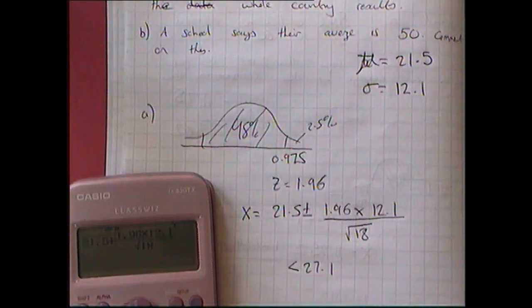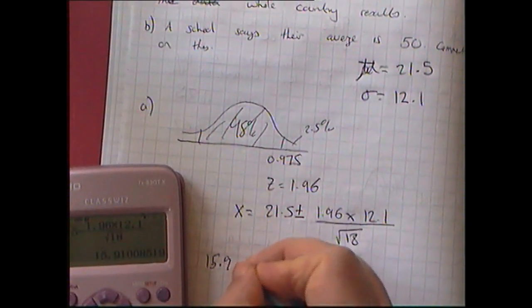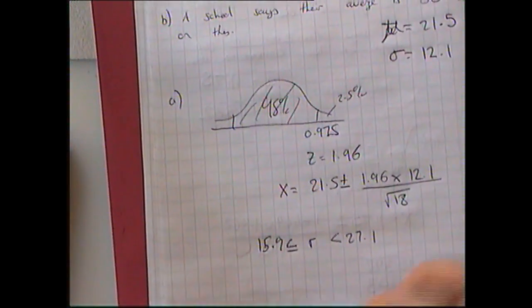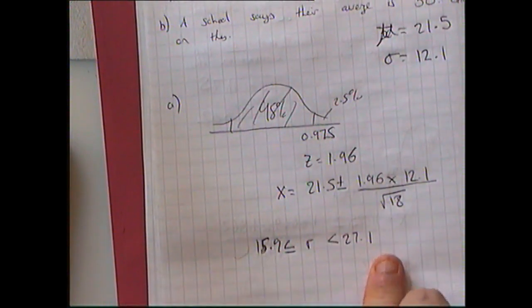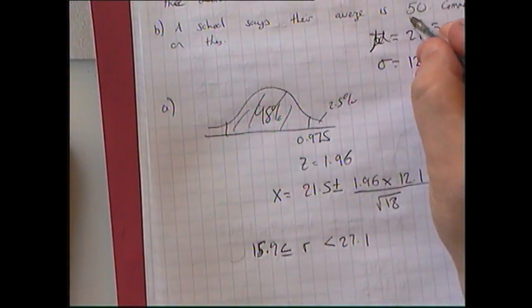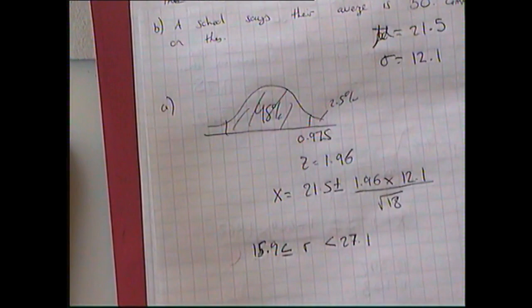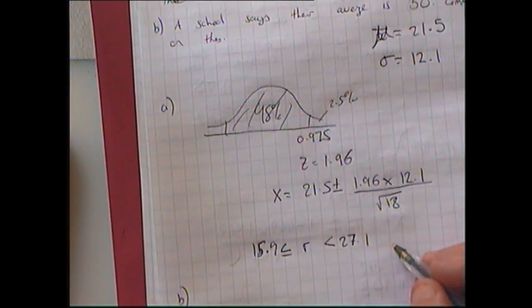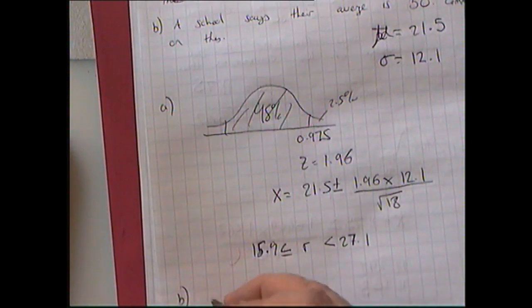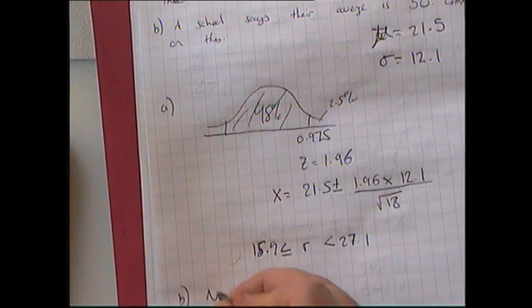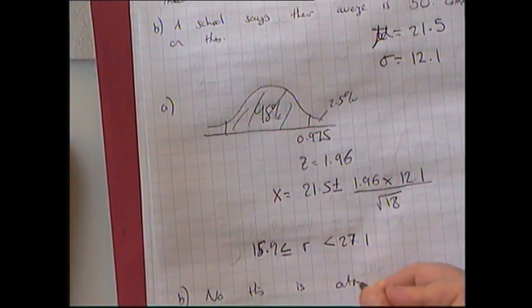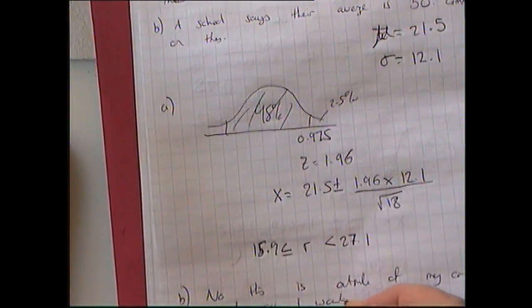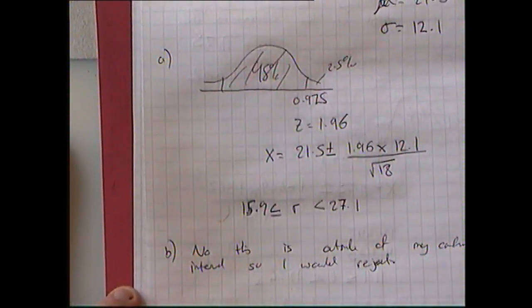The upper end is 27.1 and the lower end — changing addition to subtraction — gives 15.9. So I'm 95% confident the test results will be between 15.9 and 27.1 marks. A school claiming their average mark is 50.9 — that is well outside my confidence interval, so I would reject that claim.